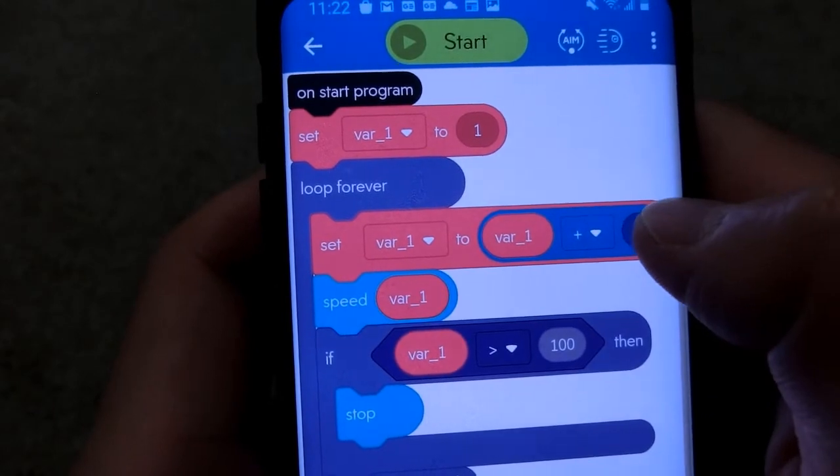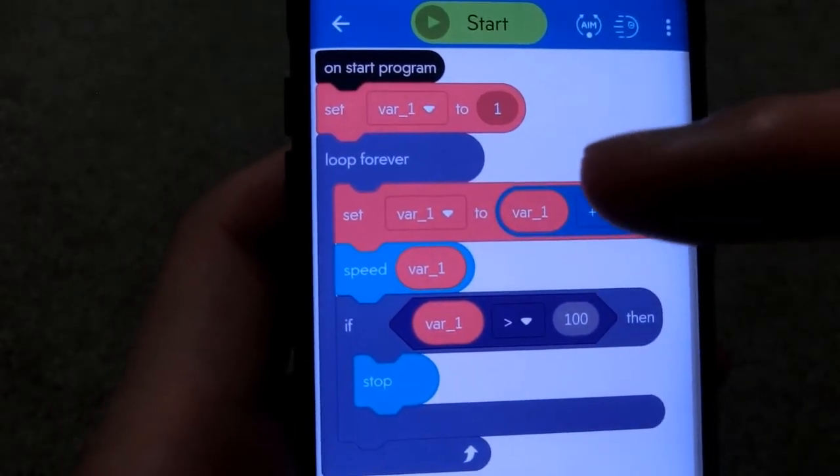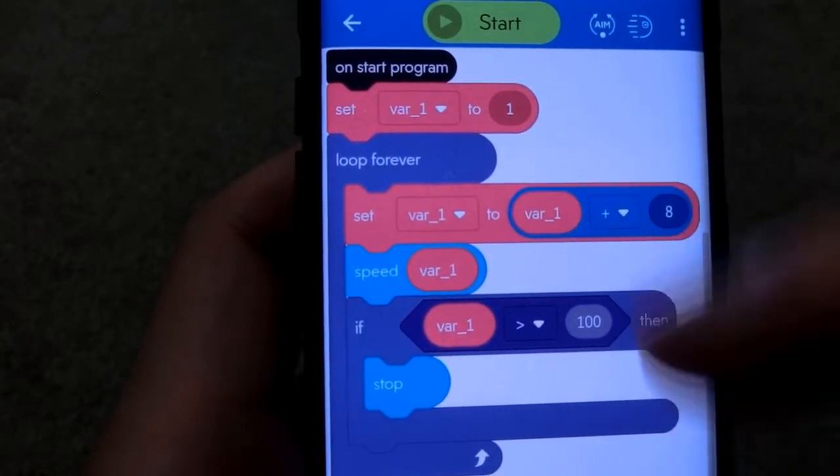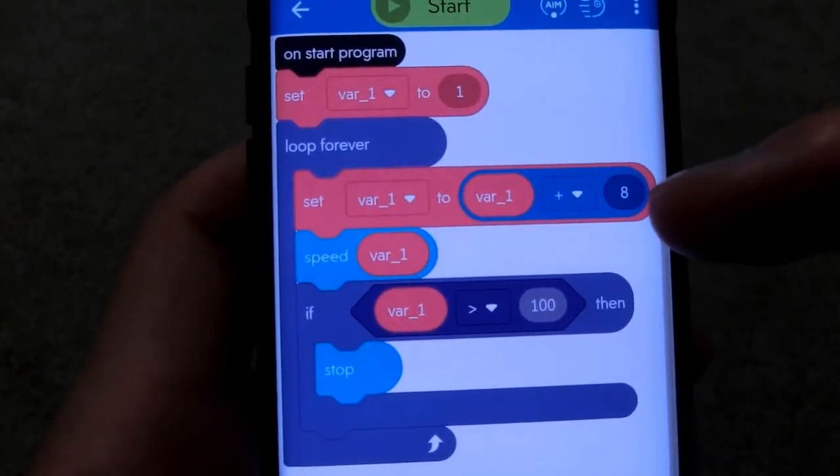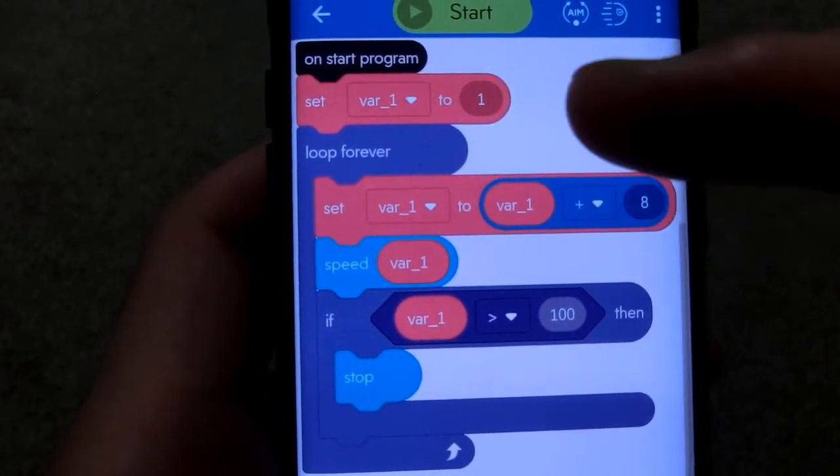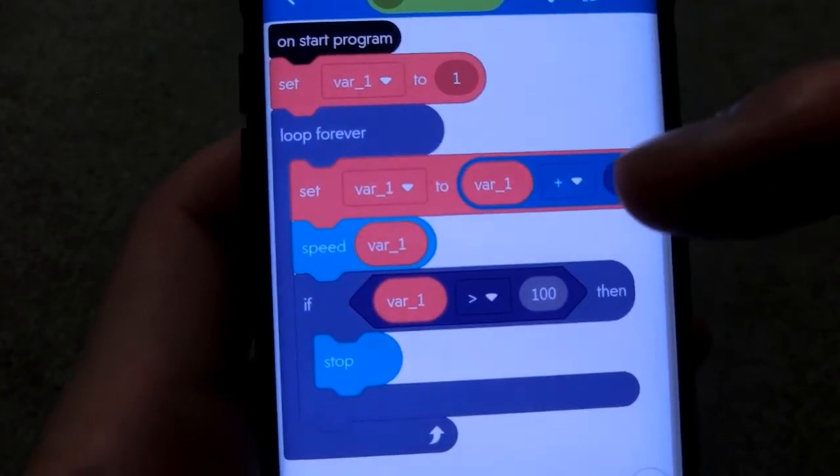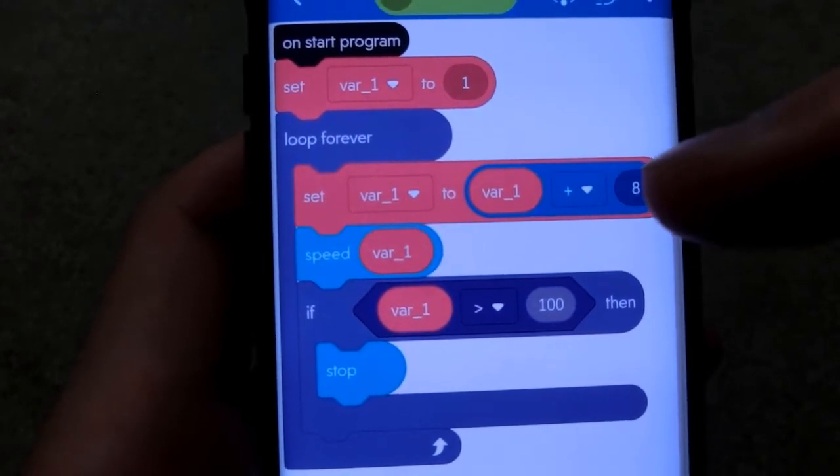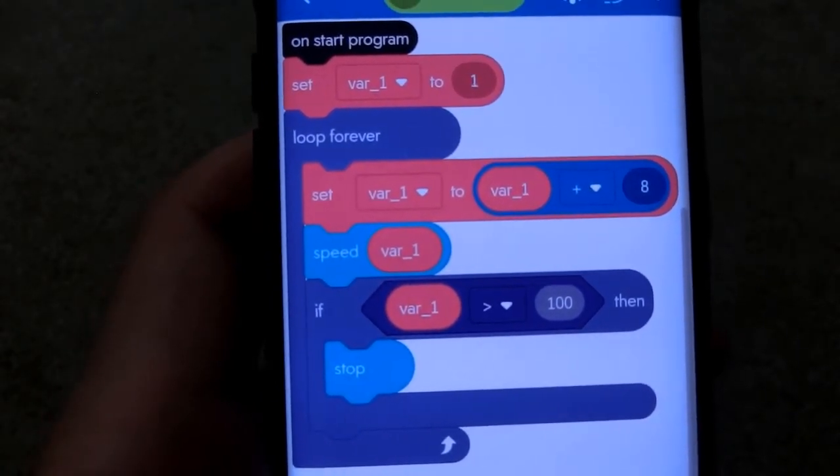Because the acceleration is too high, it's going to reach 100 really quickly. The computer runs the code really fast. You can imagine, at first, after the first loop, variable 1 is going to hold 9 instead of 1. Originally it was 1, and after it gets into the loop for the first time, it becomes 9. So 9 then add 8 will be 17, and so on.